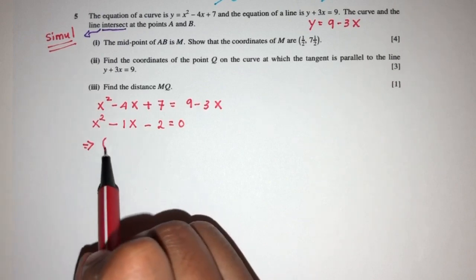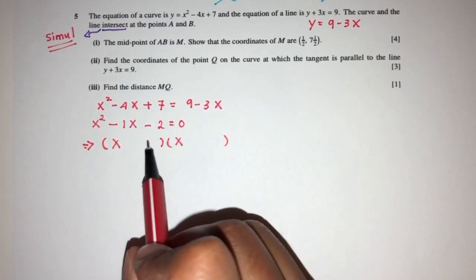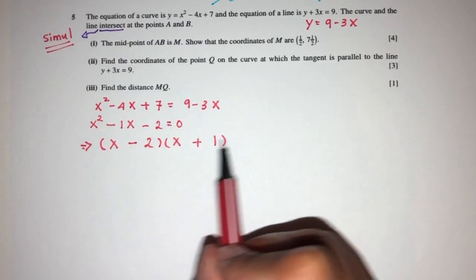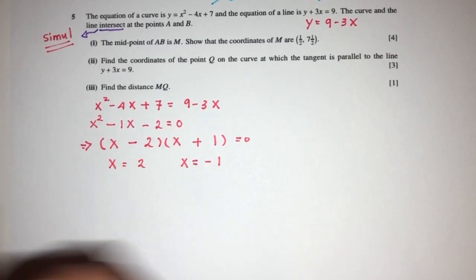That will be x times x. 2 is 2 times 1, minus 1 is minus 2 plus 1. So (x - 2)(x + 1) = 0. x will be the value of 2, and x will be -1.